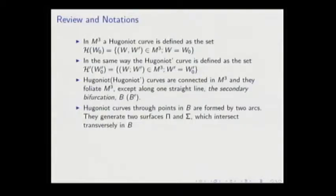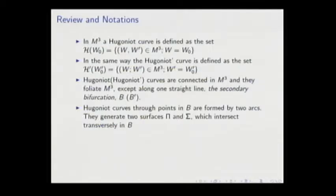In the same way, we define the Hugoniot prime curve. These curves are connected in M3 and foliate M3 except along the straight line, the secondary bifurcation. Hugoniot curves through points in the secondary bifurcation are formed by two arcs. They generate two surfaces, pi and sigma, which intersect transversally in B.